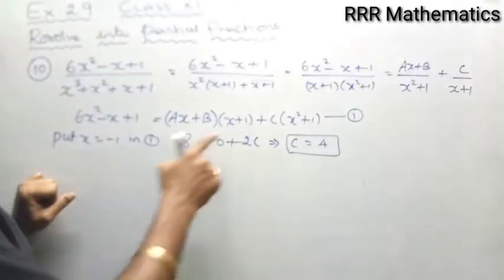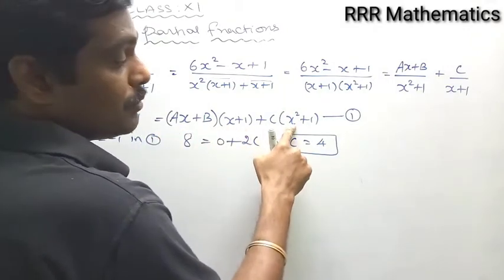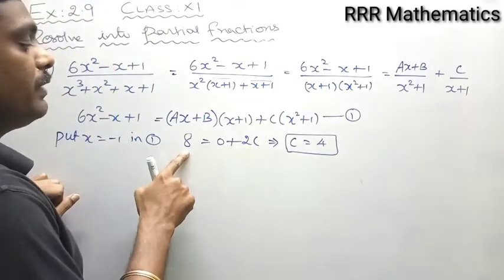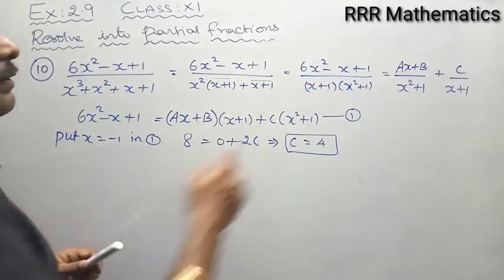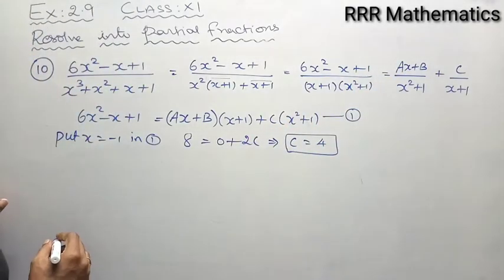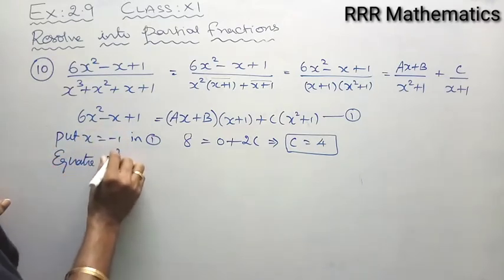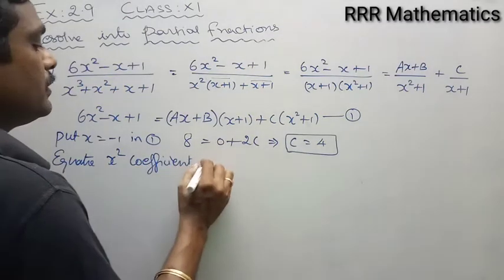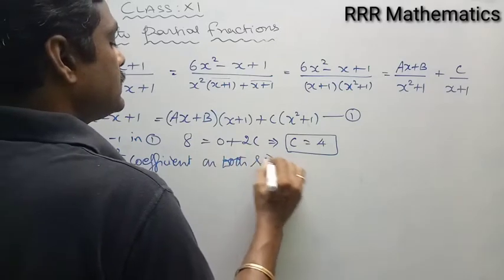The first term is zero because of the factor (x+1) = 0, and (-1)²+1 = 2, so 2c = 8, giving c = 4. Now to find a and b, I equate the x² coefficients on both sides from equation 1.